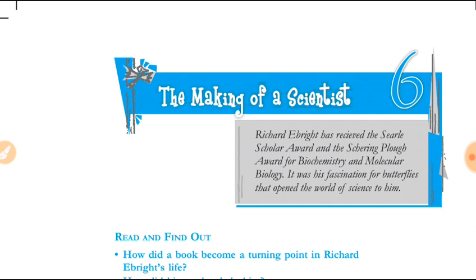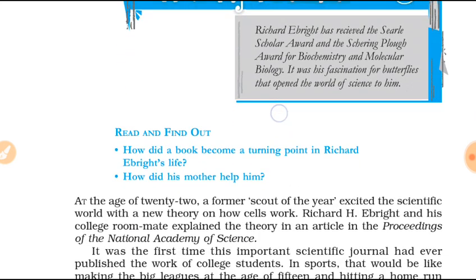The meaning of 'paper' here is: if you discover something and write about it, then publish it in a magazine, it is termed a paper written by a scientist. So at the young age of 22, Richard's research paper was published, and it was the first time a research paper of a college student was published.